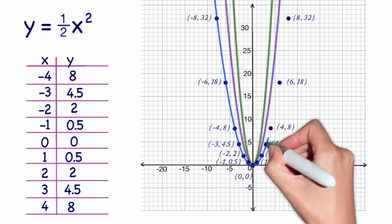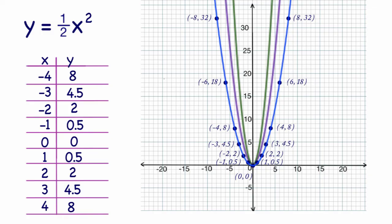Now we're ready to connect the dots. And it is clear that the parabola for y equals 1 half x squared is wider than the other two graphs.